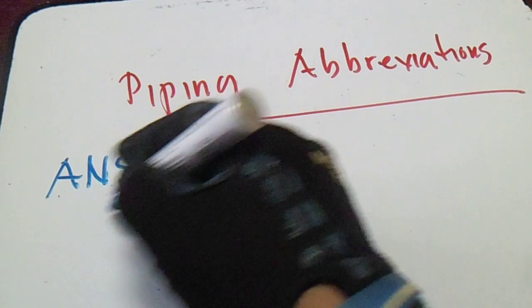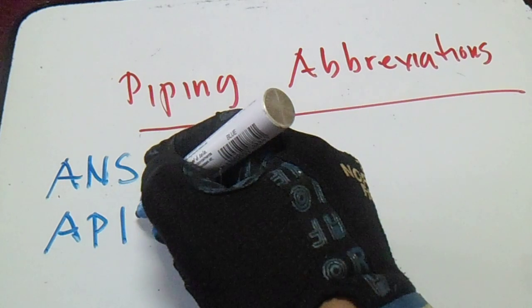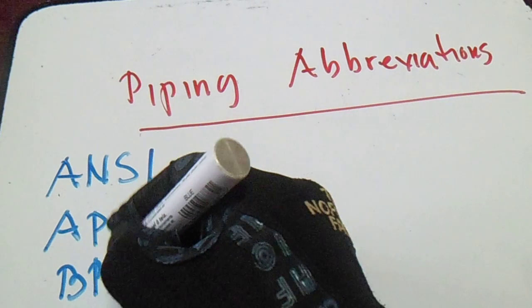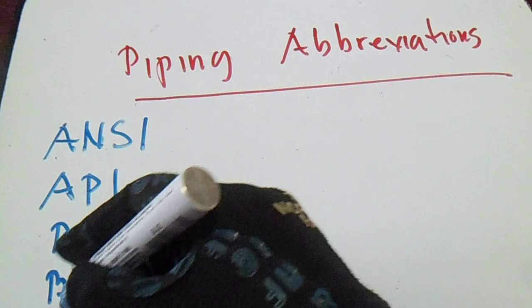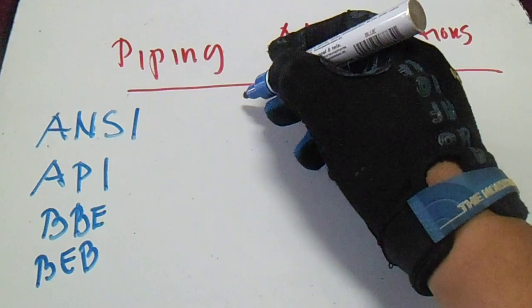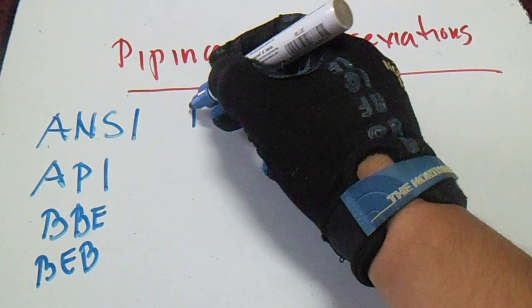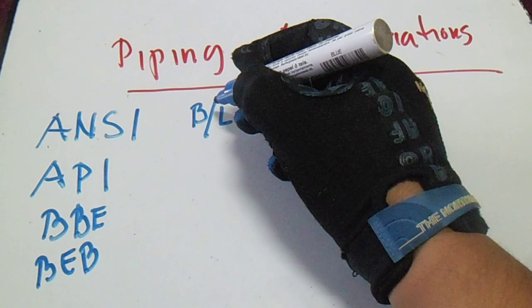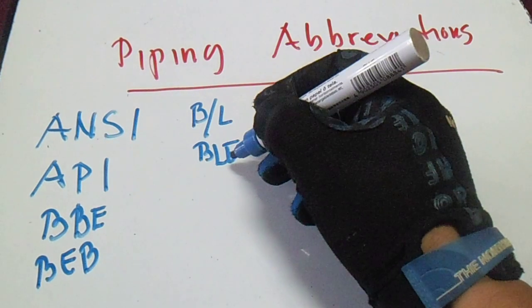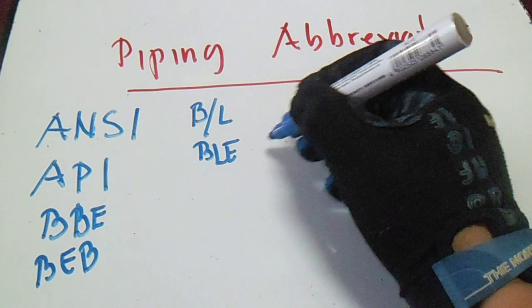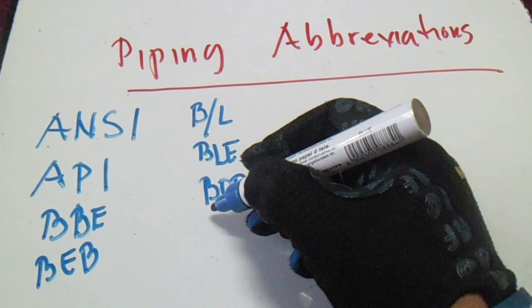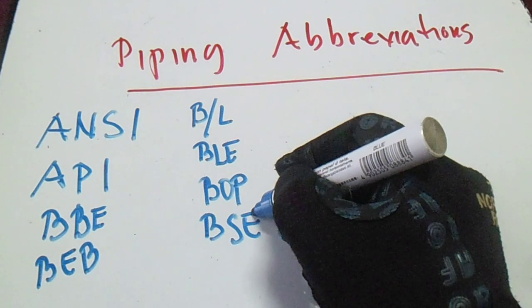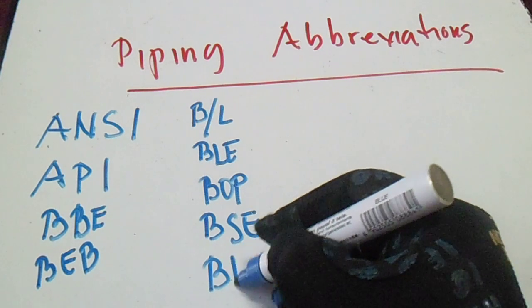The abbreviations listed are: ANSI, API, BBE, BEB, BL, BLE, BOP, BSE, and BRW.